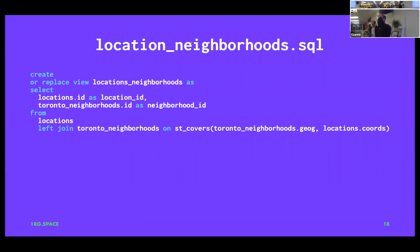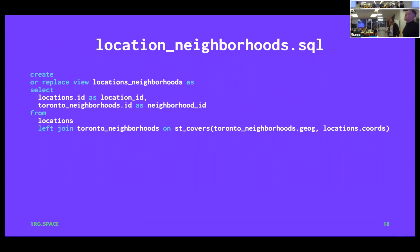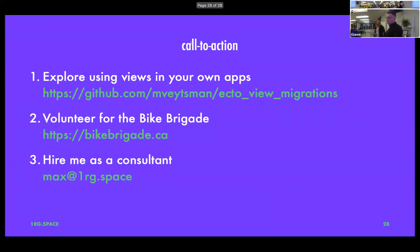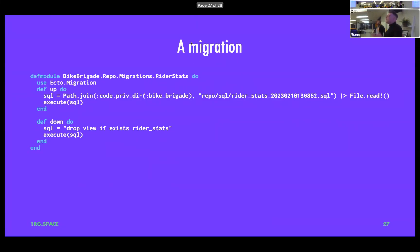Johnny asks: this library — does it happen during the migration process? It's just a generator. It just generates a new migration with boilerplate to load SQL for you. It generates this code and an empty SQL file, and just looks at the directory to see if there's anything to roll back to.